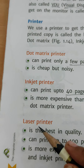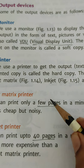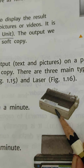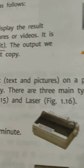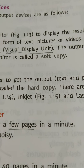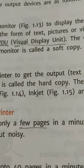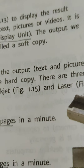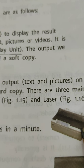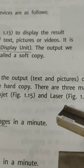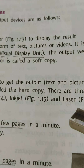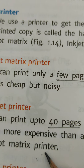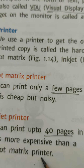The types of printer are: first, the dot matrix printer; second, the inkjet printer; and third, the laser printer. In the dot matrix printer, we can print only a few pages in a minute. It is cheap but it is noisy — when you are using this dot matrix printer, a sound like 'kar kar' is coming from it.